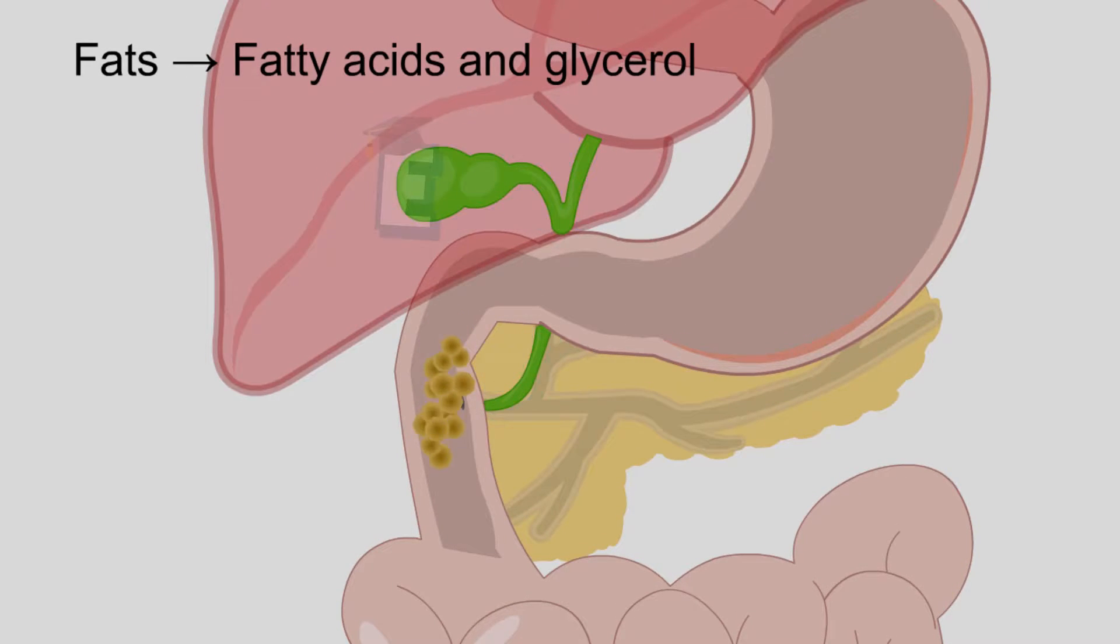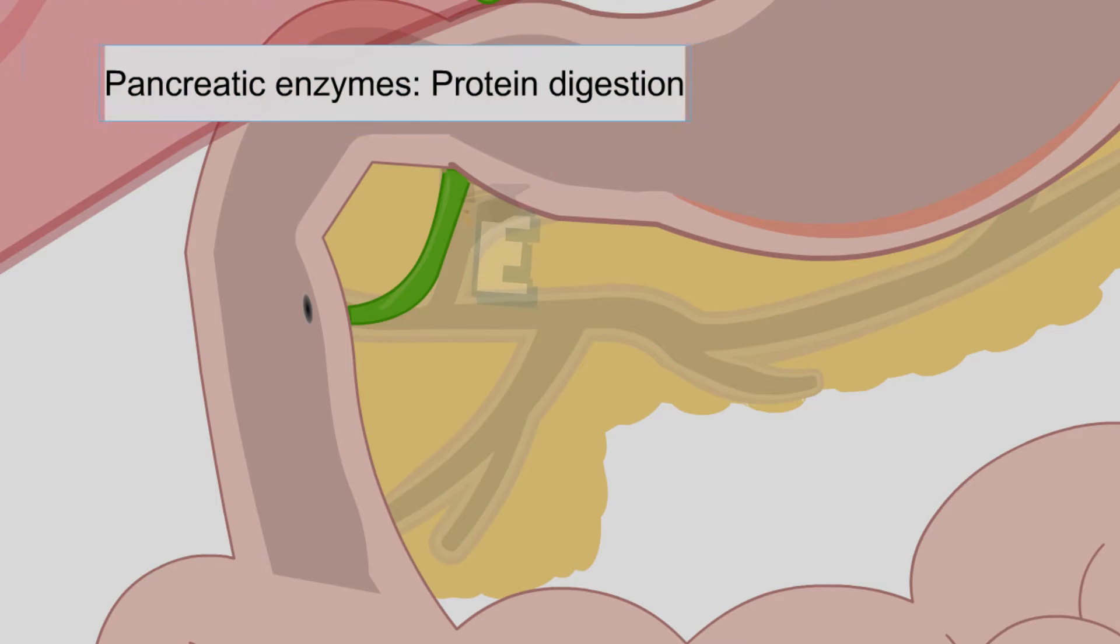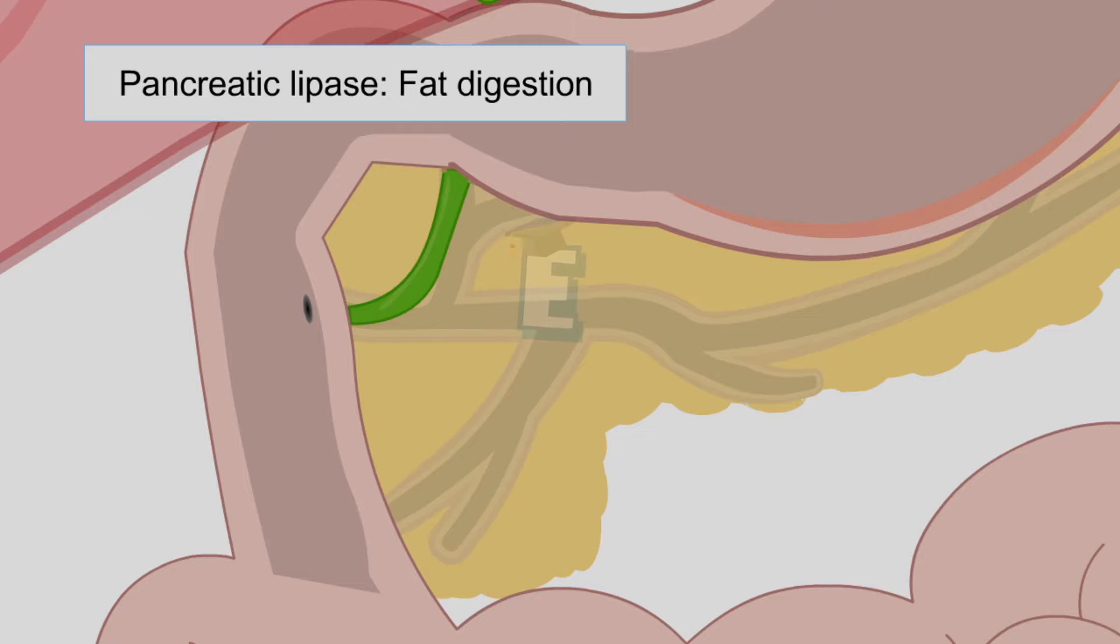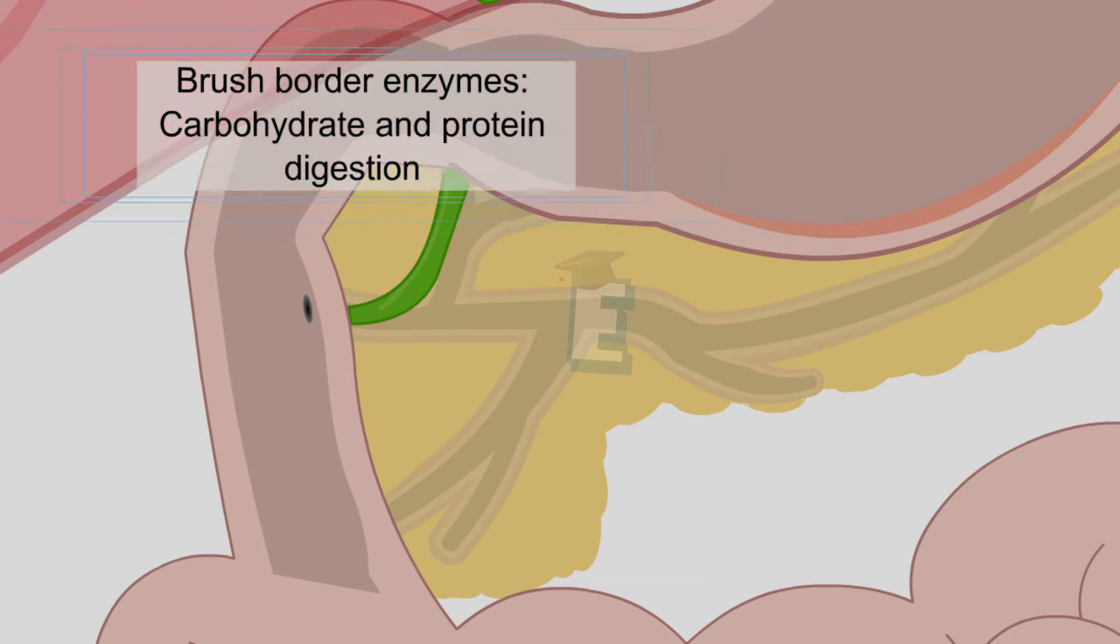Fats are digested into fatty acids and glycerol. The pancreas produces pancreatic amylase to facilitate carbohydrate digestion, pancreatic enzymes for protein digestion, and pancreatic lipase for fat digestion. The small intestine produces brush border enzymes to help with carbohydrate and protein digestion.